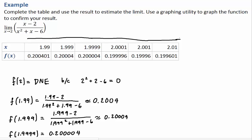X equals 2 would live here. Then you'd have 2.001, 2.01, then 1.99, 1.999, and 1.9999. Your function, as you're getting closer and closer to 2 in the x-coordinate, is getting closer and closer to 0.2 in the y-coordinate.